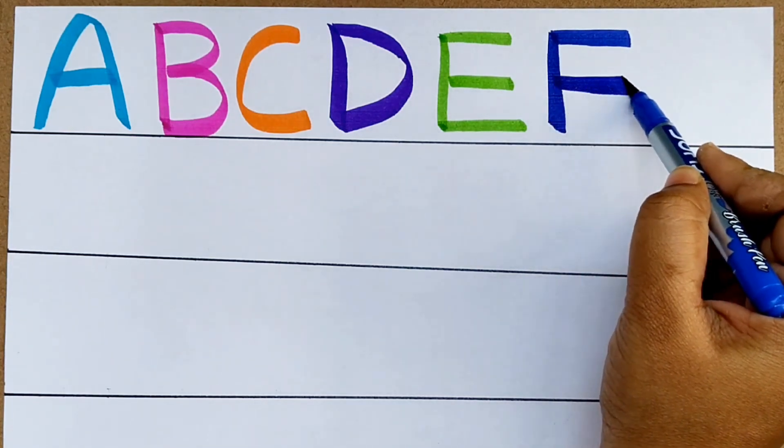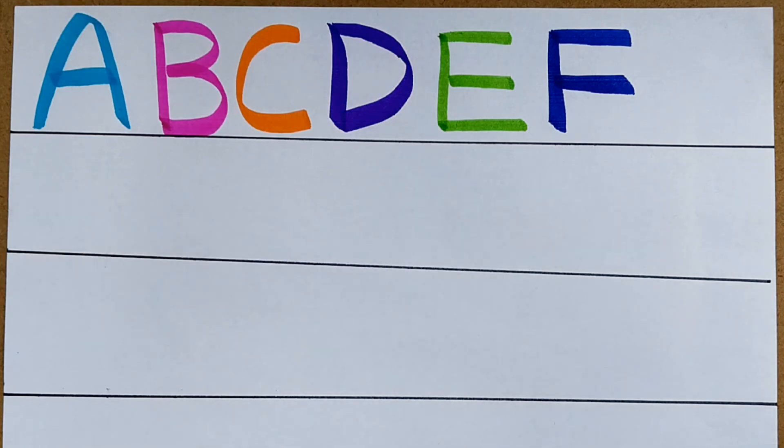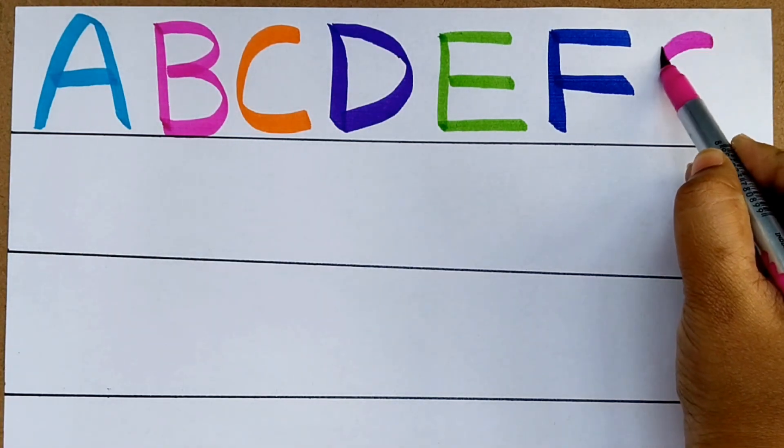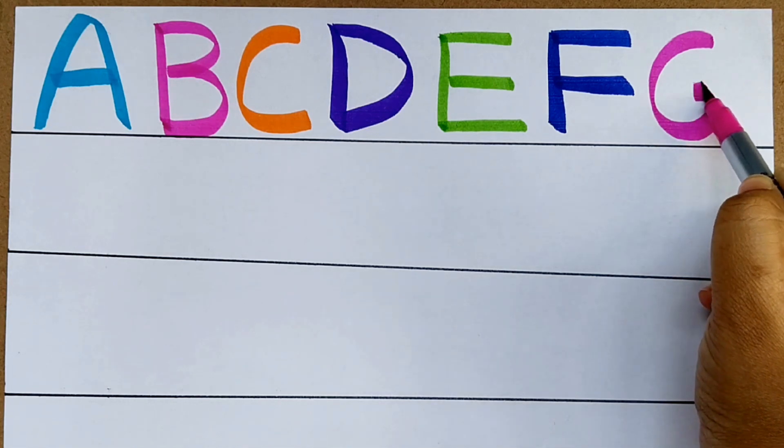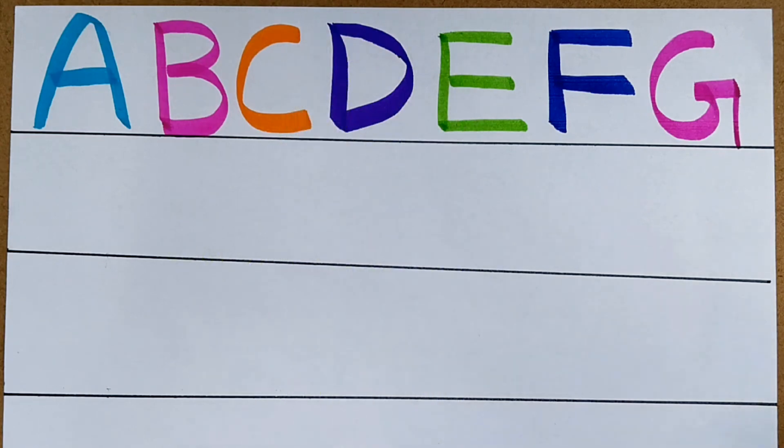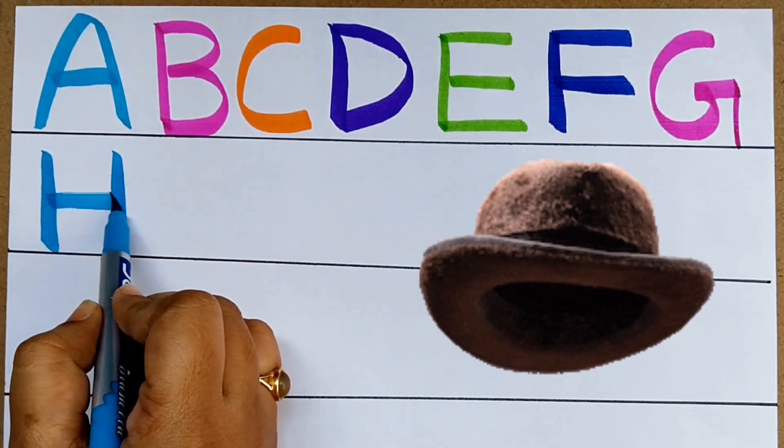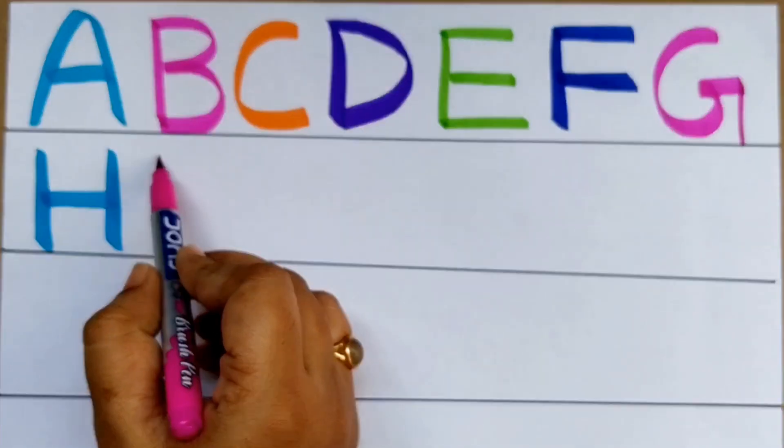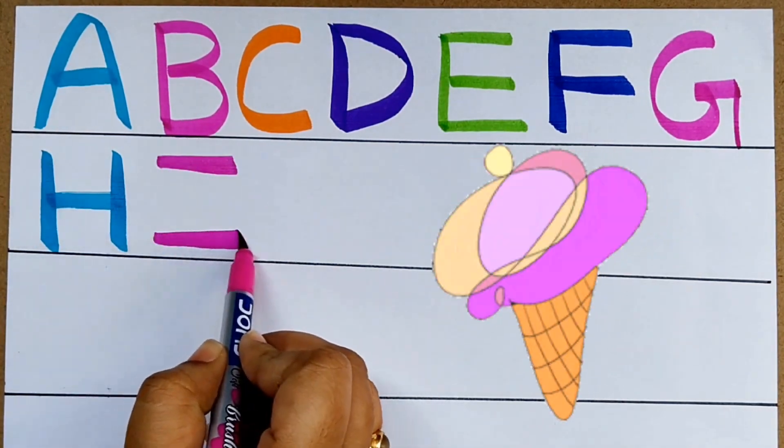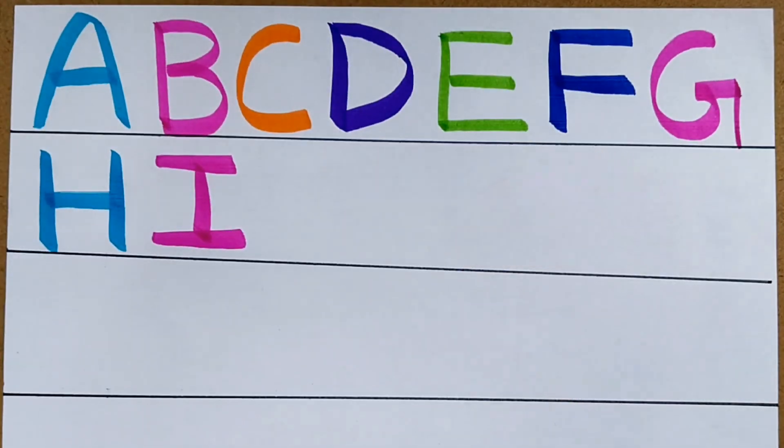F. F for fish. G. G for grass. Grass. Grass. H. I. Ice cream. Yummy.